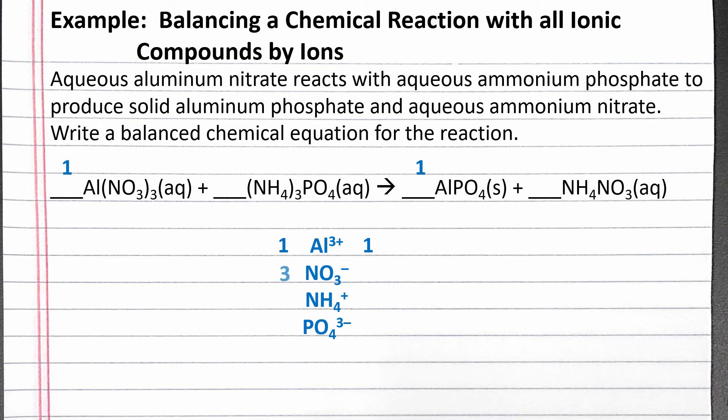Now we have three nitrate on the left. To get three on the right, we can add a three coefficient in front of ammonium nitrate.